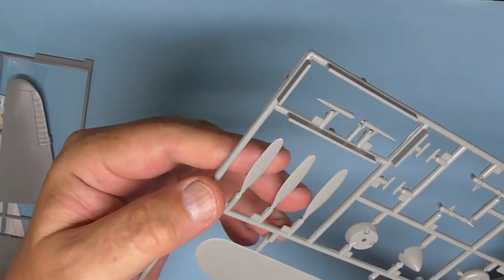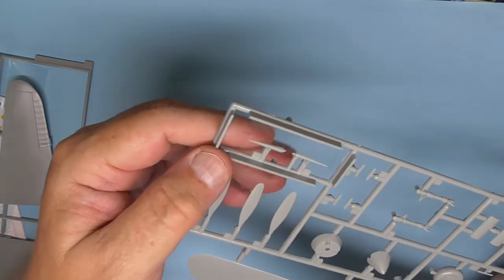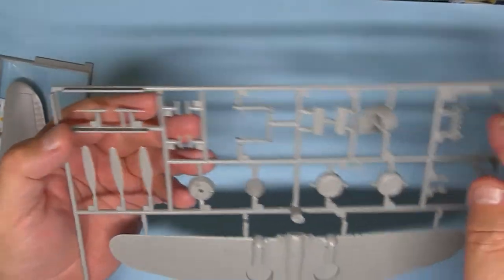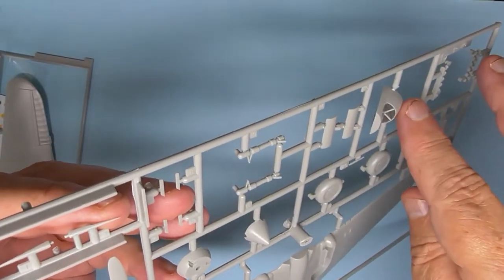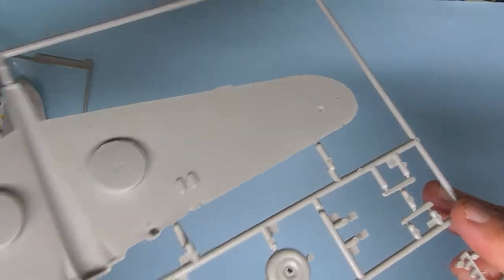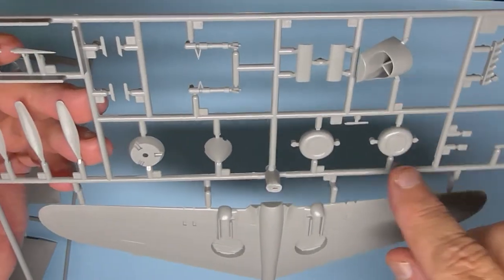So you have propeller blades there, so you can make them separate. Don't understand that but we'll have a look at the instructions. Undercarriage parts, nose intake, the exhaust stacks and they're not hollowed out, you'd have to drill them out I think, give that a go.